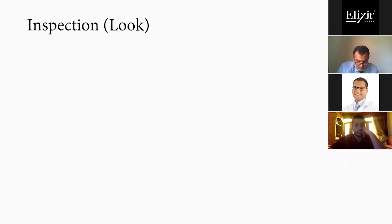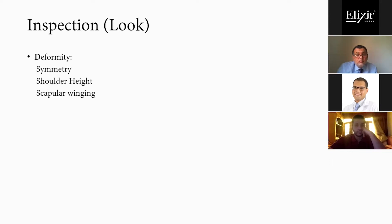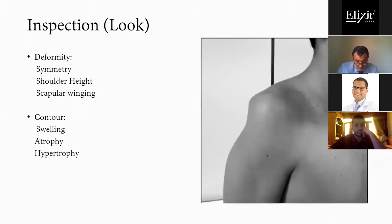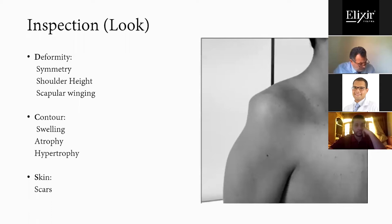Starting with inspection, following the abbreviation DCS: first, look for any deformity. Look at both shoulders for any asymmetry, check the shoulder height, and any scapular winging. Look for the contour of the muscles — is there any muscle wasting, such as deltoid wasting, or atrophy of the supraspinatus or infraspinatus muscles in chronic cuff tears? Check the skin for any scars from previous operations such as arthroscopy or internal fixation.